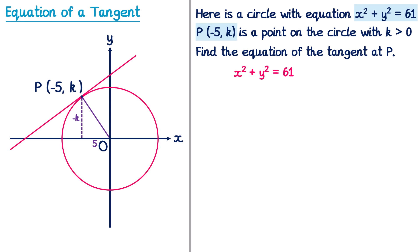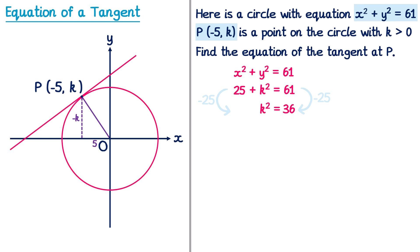So instead of X squared it's negative 5 squared, and instead of Y squared it's K squared. Negative 5 squared gives positive 25. Now we just need to solve this equation: subtract 25 from both sides, so we have K squared equals 36. Then we square root both sides, and we get K equals plus or minus 6. But the question tells us K is greater than 0, so K is positive, so K is actually just 6.